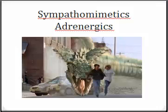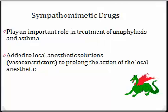Drugs can either stimulate or block alpha and beta receptors within the SANS. Drugs known as sympathomimetics or adrenergics work to stimulate the SANS response. Sympathomimetic drugs play an important role in the treatment of anaphylaxis and asthma. They're also added to local anesthetic solutions as vasoconstrictors — epinephrine and levonordefrine — to prolong the action of local anesthetic.